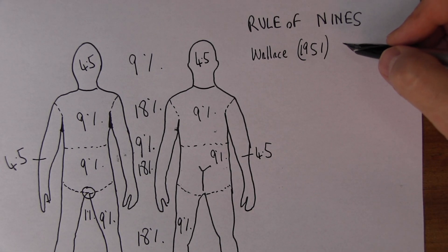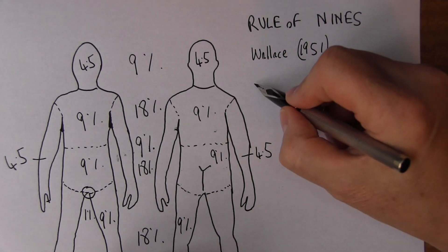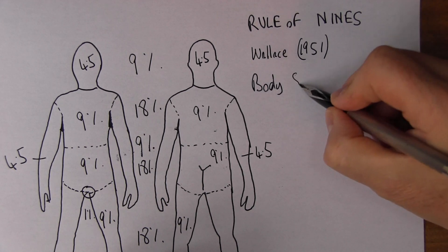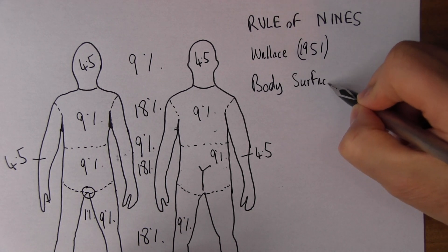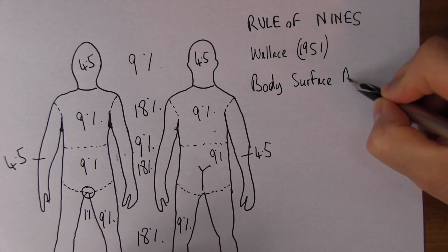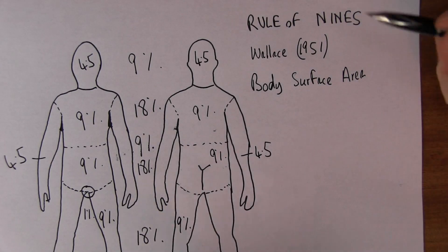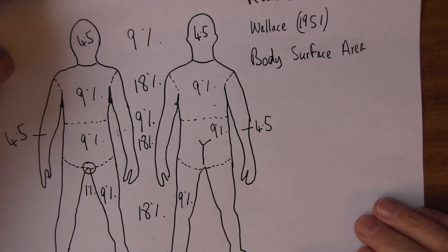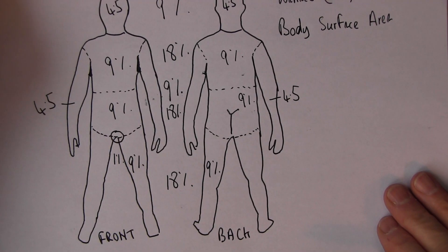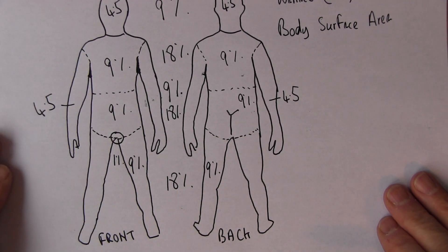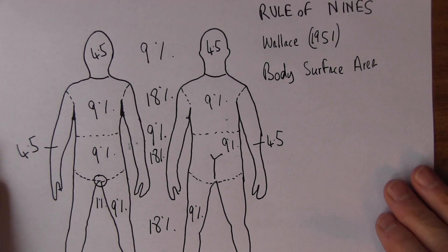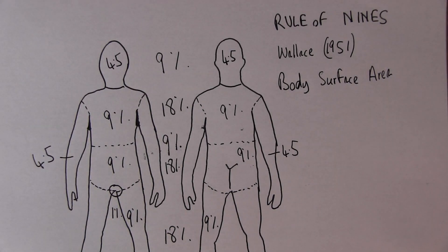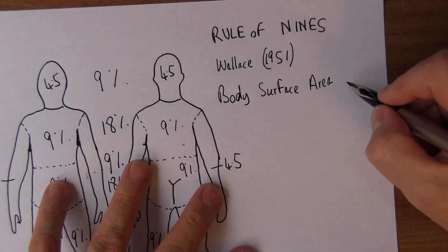So it's important to understand body surface area. This applies really quite well if people are over the age of 16 and aren't too obese — for the very obese you need to make some adjustments for the alterations in body surface area with obesity.